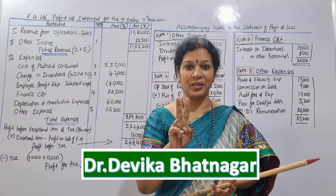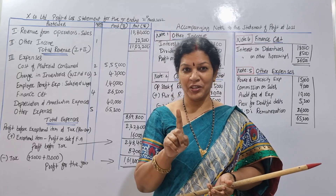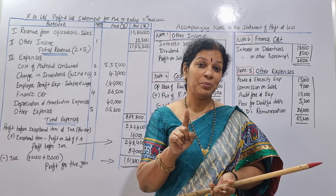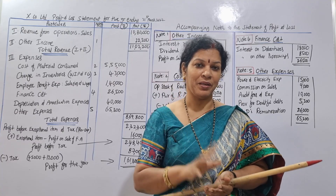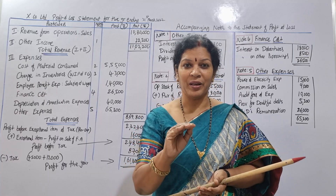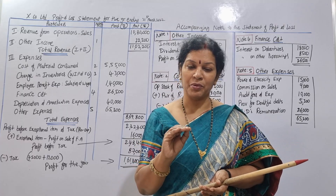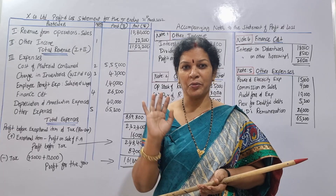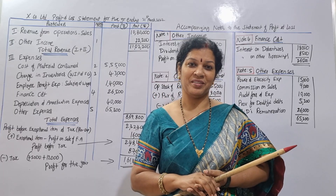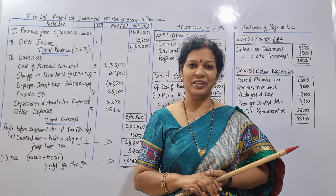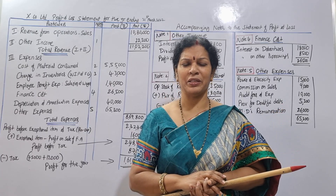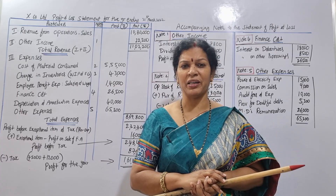In company accounts, there is a statement of profit and loss and a statement of balance sheet. The format of the statement of profit and loss will be very easy for you. That is why we will work on a problem. This one problem is equivalent to 10 problems — it is the most important problem. You will make a statement of profit and loss with all required columns.